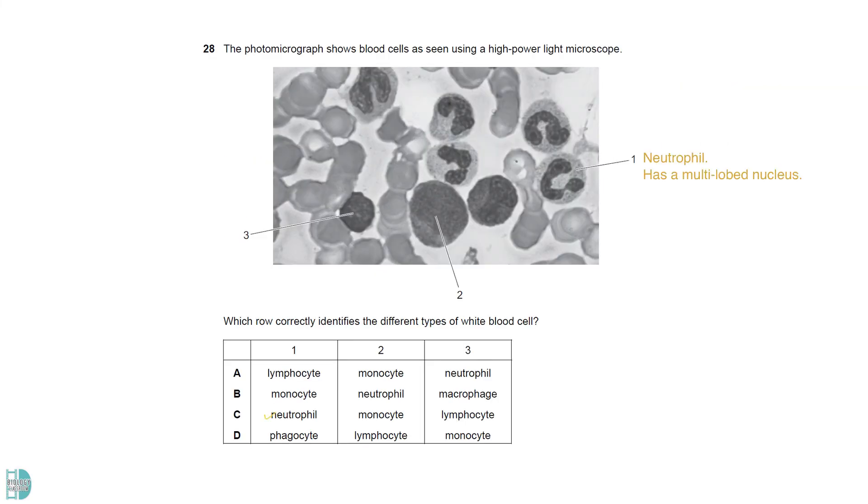1 is a neutrophil. It has a multi-lobed nucleus. Even though we can't see the nucleus of cell 2, judging from its large size, it should be a monocyte. 3 has a large circular nucleus that occupies most of its cytoplasm. This is a characteristic of lymphocytes.